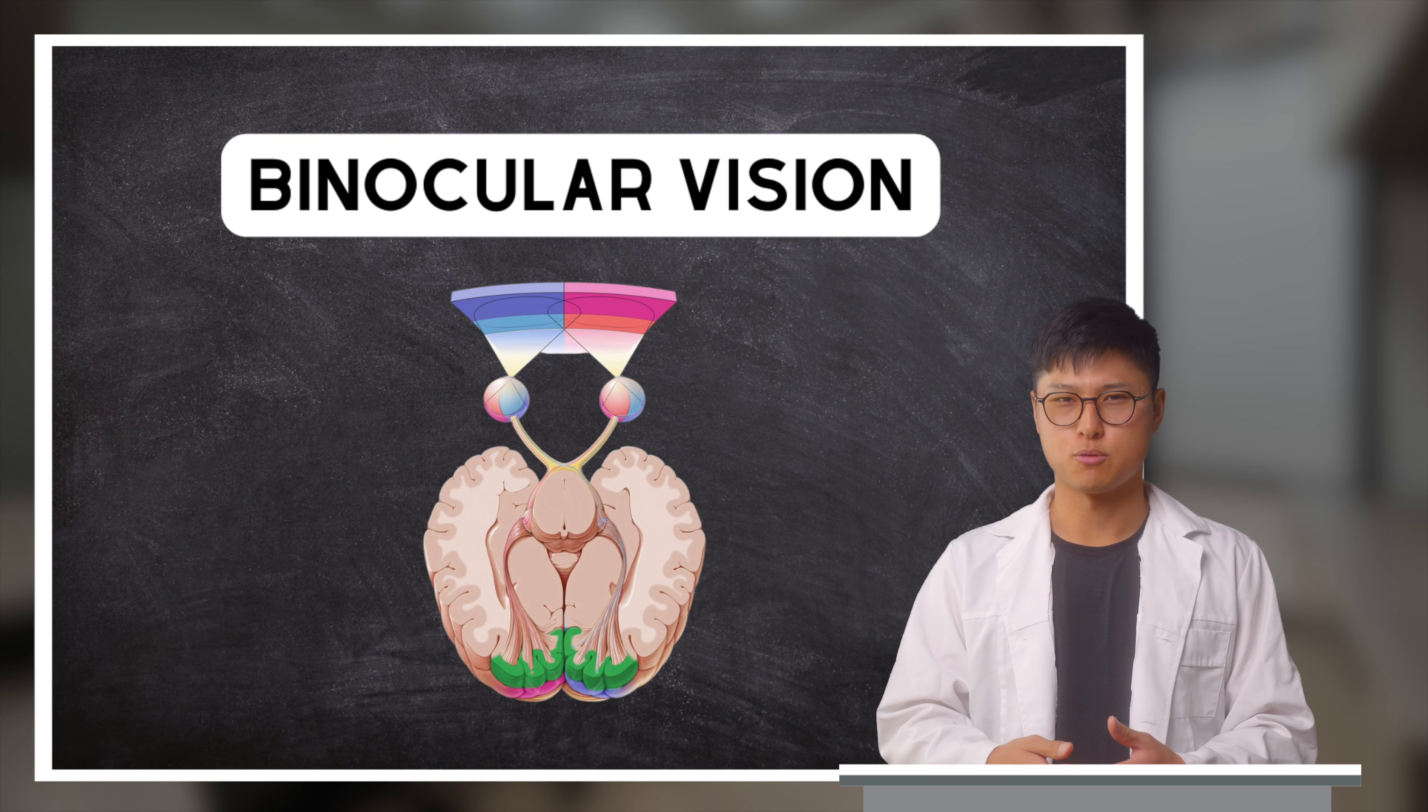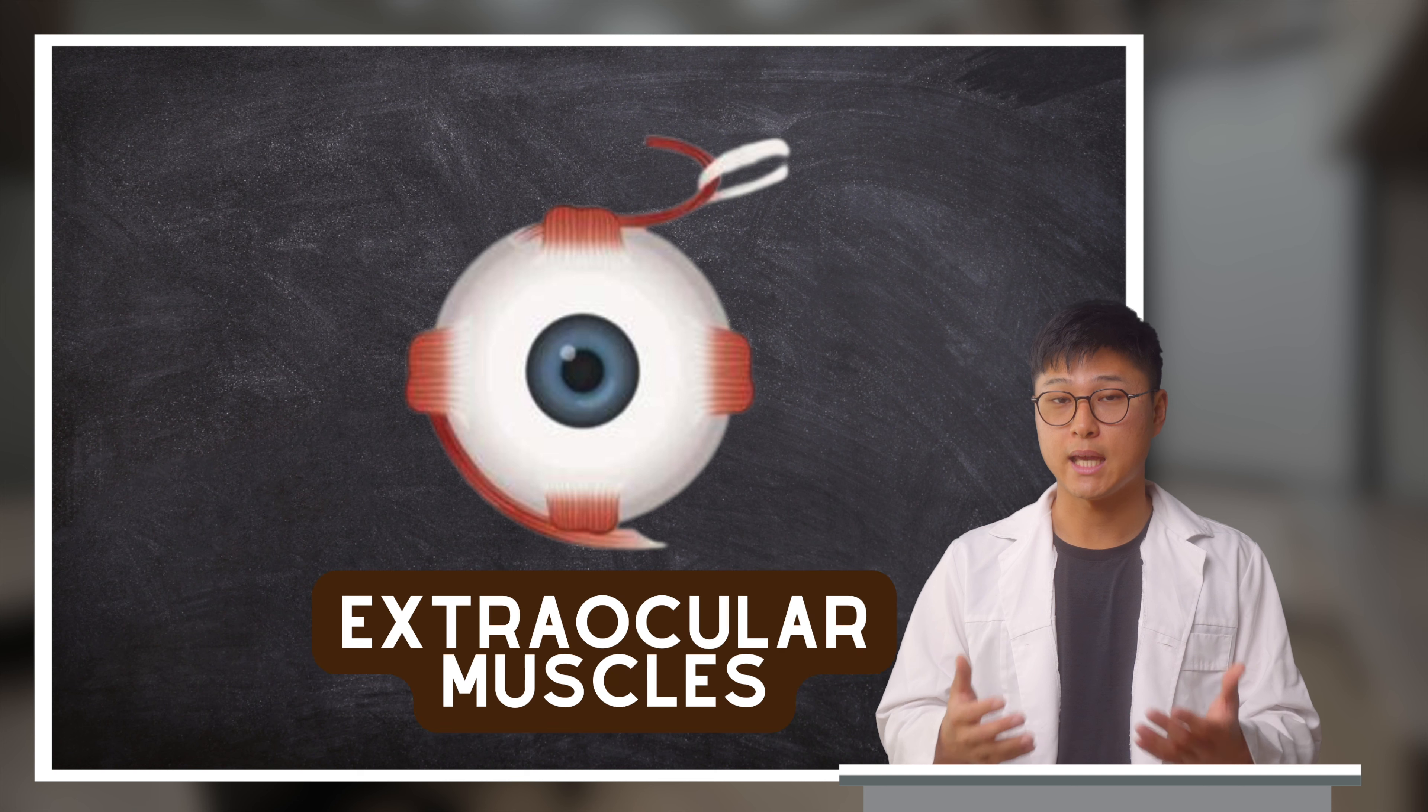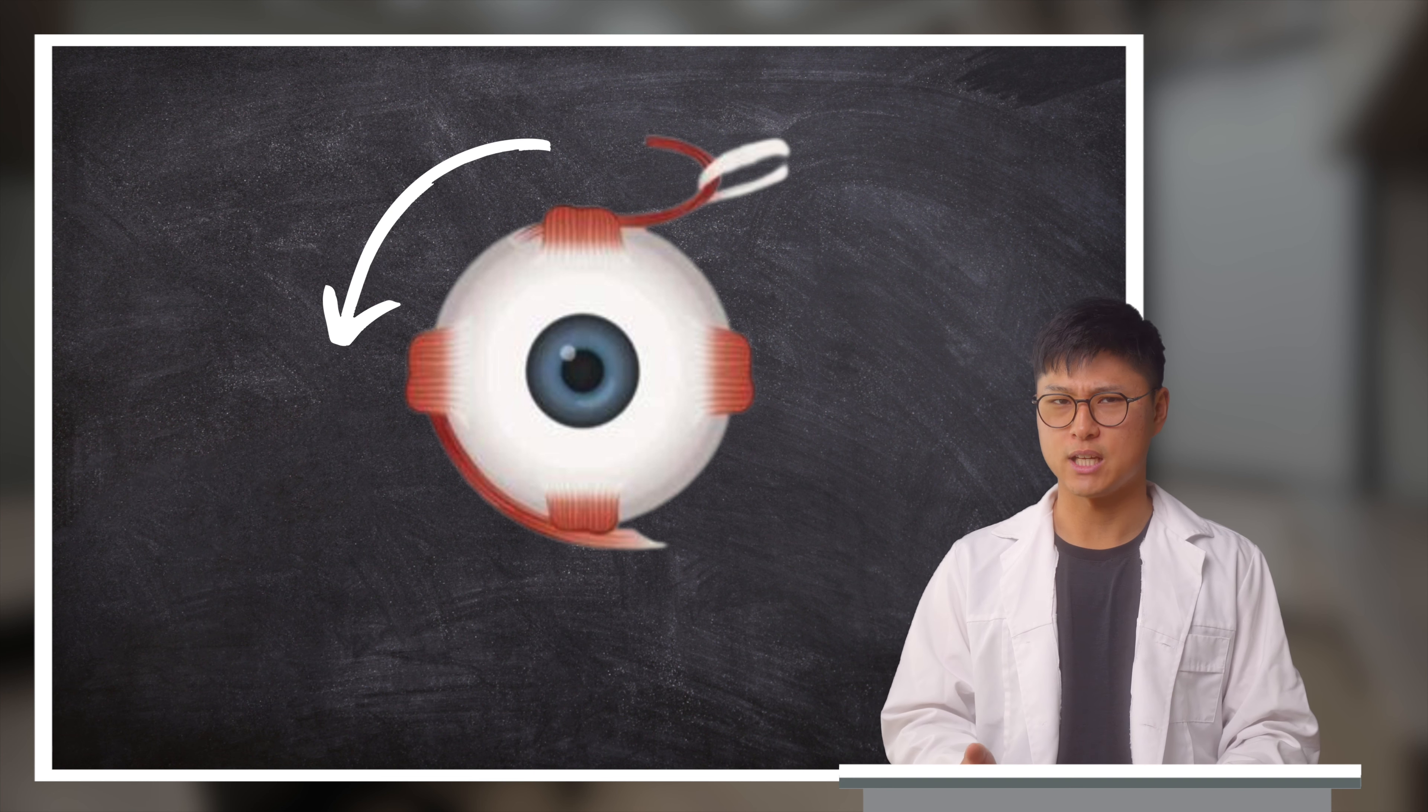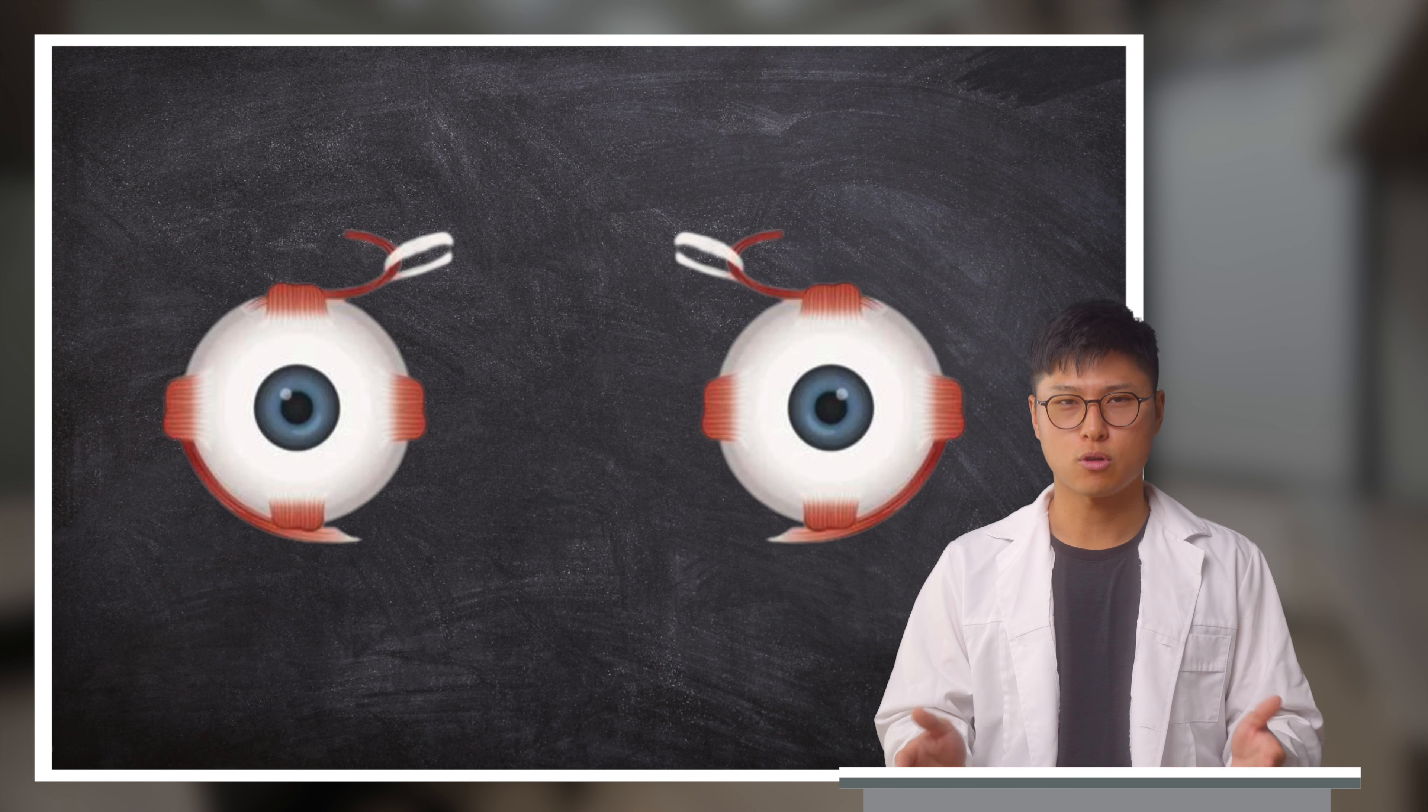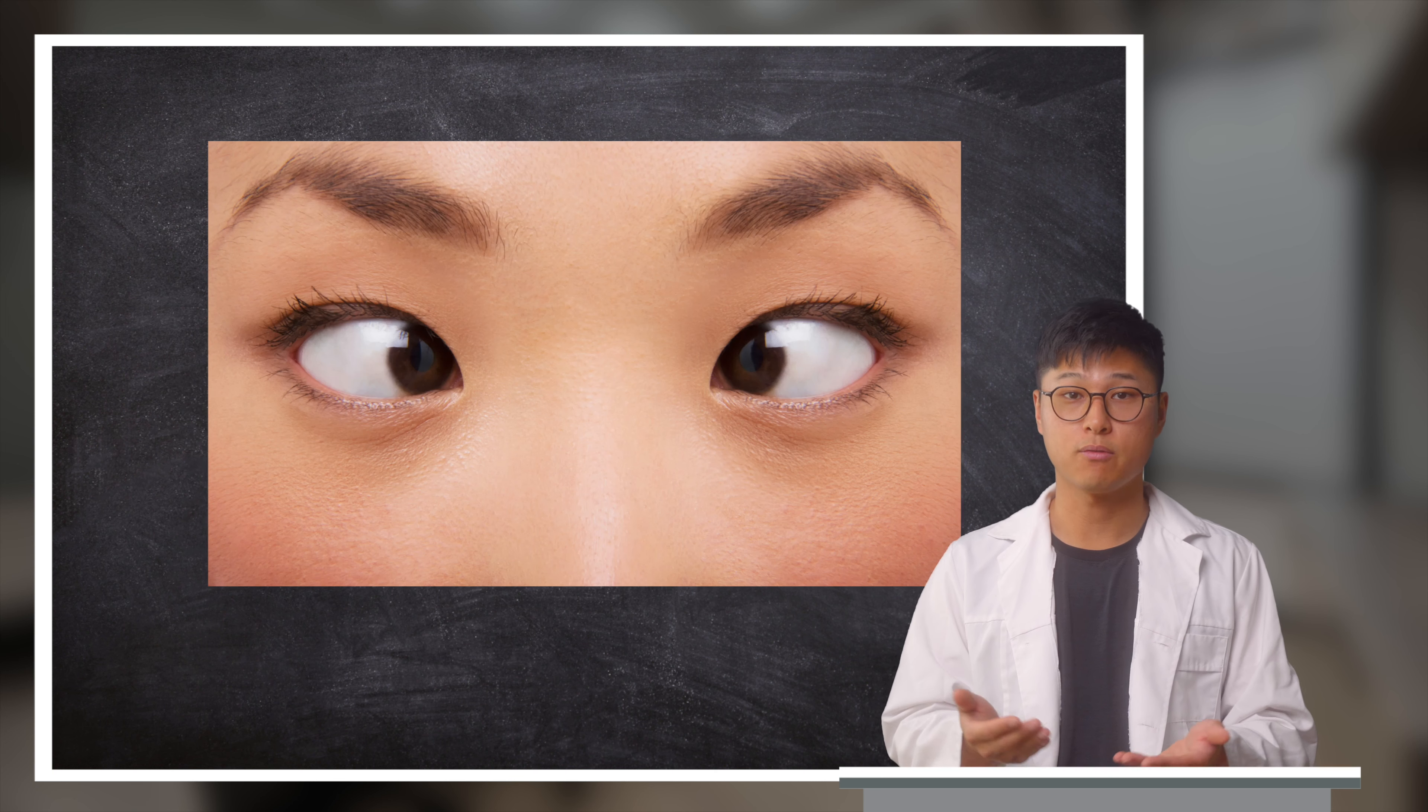Binocular vision is a complex subject. So before we begin, let's cover some basics. The muscles around our eyes, also known as the extraocular muscles, are designed to move them in different directions: up, down, left, right, and even rotationally. When we cross our eyes, we're pulling the inner muscles inwards, making the eyes point towards the nose, giving off this appearance.